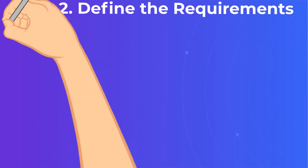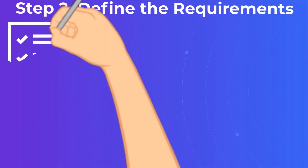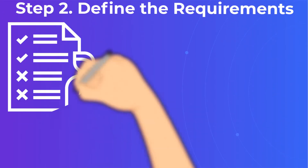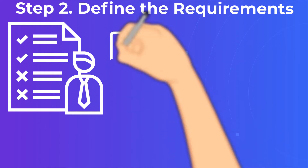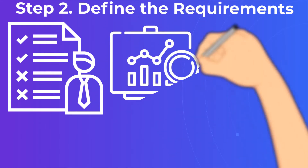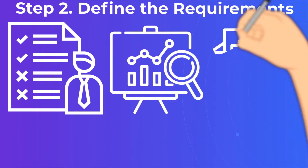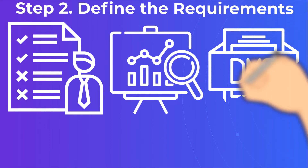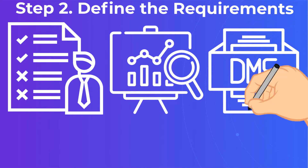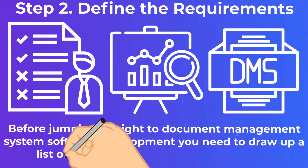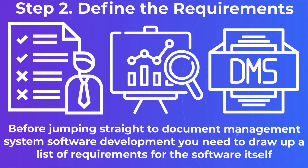Step 2: Find the requirements. Before jumping straight to document management system software development, you need to draw up a list of requirements for the software itself. This requires the analysis of the general functions you want your DMS to perform, general industry regulations, and the results generated in data transactions.